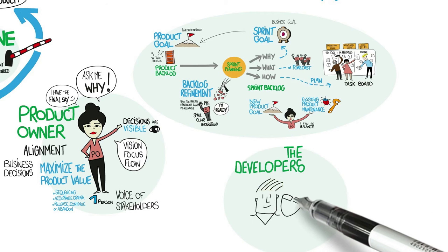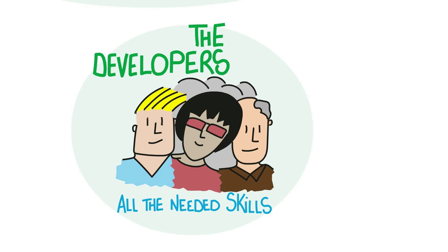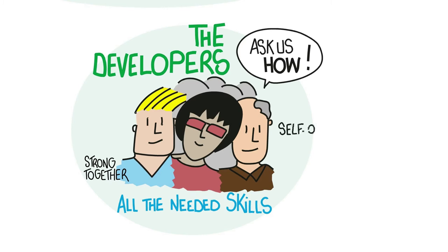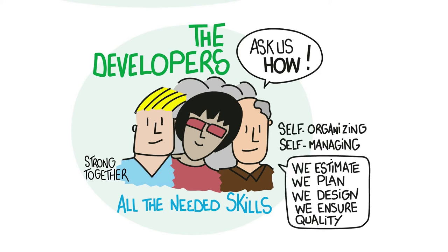Developers create the product increment — they solve the problem and deliver the solution. Together they have all the skills needed to create the increment; even though no one individual can do everything, together they are strong. The key question for developers is how. The developers are self-organizing and self-managing — they make the forecast, plan their work, design the solution, and ensure the quality of their work. They are professionals who care about results, and they are dedicated 100% to the project. If they worked on more than one project at a time, commitment to results and accountability would not be possible.